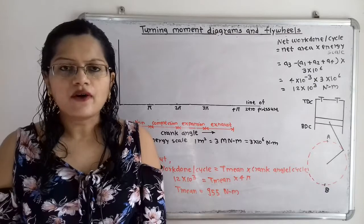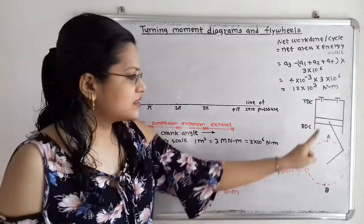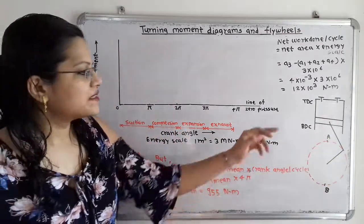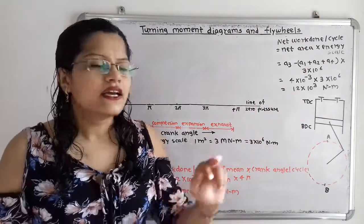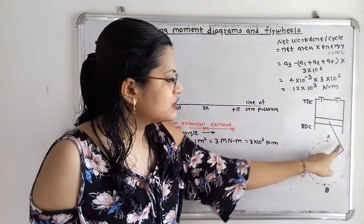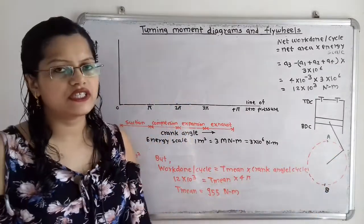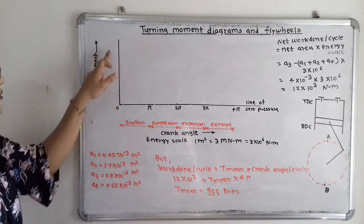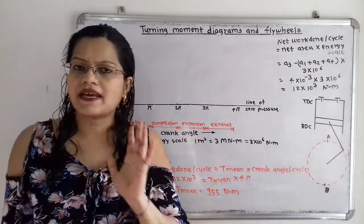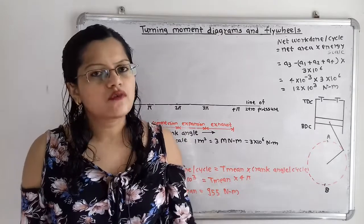Now we will understand the suction stroke. We have the inlet valve, exhaust valve, and the piston-cylinder arrangement, where the piston is connected to the crank via a connecting rod. When the piston moves from TDC to BDC, the inlet valve opens and the air-fuel mixture enters the cylinder. The crank moves from point A to point B, completing half a revolution. In the turning moment diagram, the vertical axis represents turning moment and the horizontal axis represents the angle covered by the crank. In the suction stroke, 180 degrees, that is pi radians, is covered.